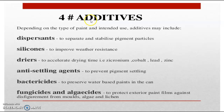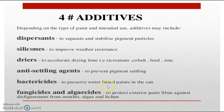Then we move to the additives. Additives depend on the type of paint, the intended use, and the requirements of the customers. We use some additives to give extra qualities to the paint. These include: dispersants to separate and stabilize the pigment particles; silicones to improve weather resistance; dryers to accelerate drying time — for example, zirconium, cobalt, lead, and zinc are added as dryers; anti-settling agents to prevent pigment settling; and bactericides, fungicides, and algaecides to prevent bacterial, fungal, and algal activity in the paint.